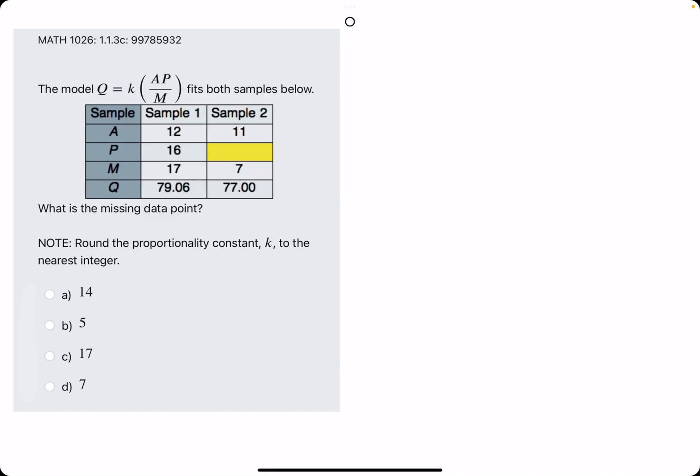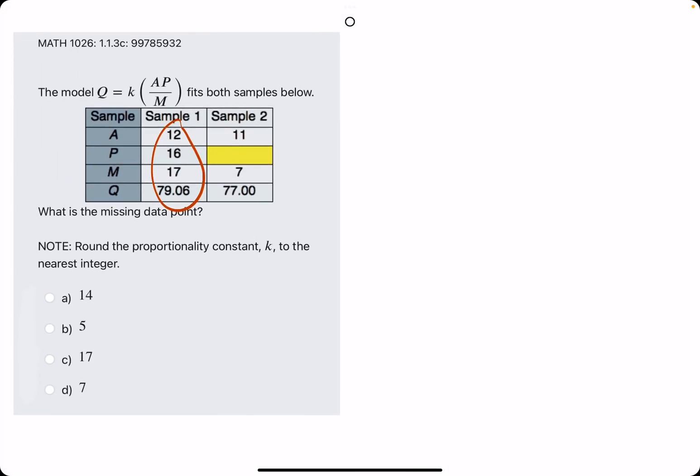The first step in this problem is to identify what our constant K is using the Sample 1 values from the table. So we're going to plug in everything we know in that Sample 1 column to our equation.